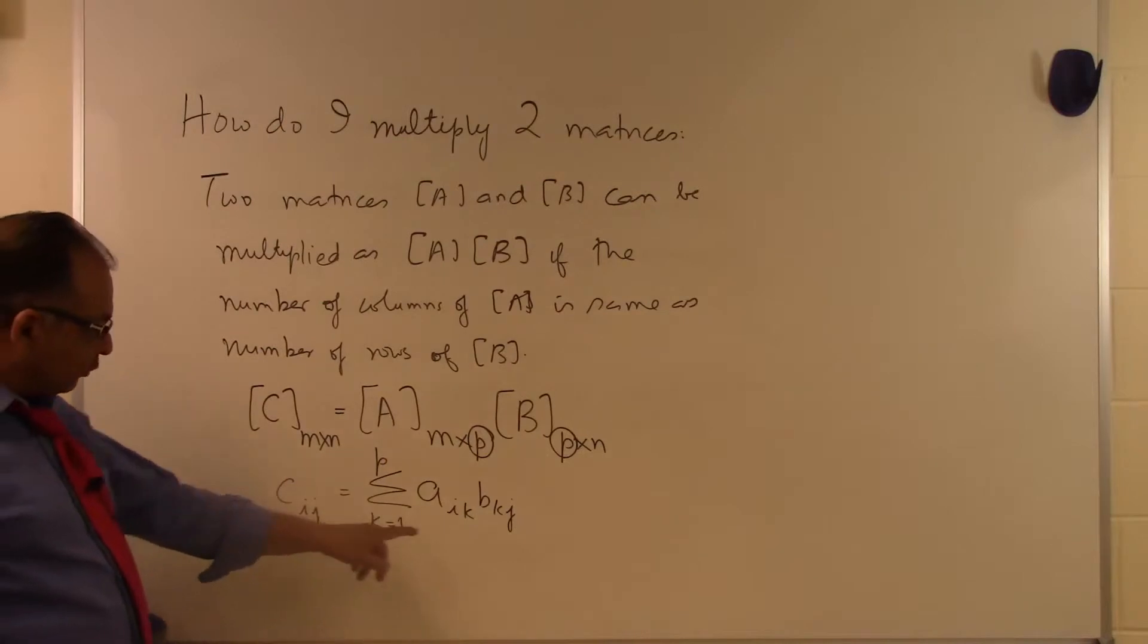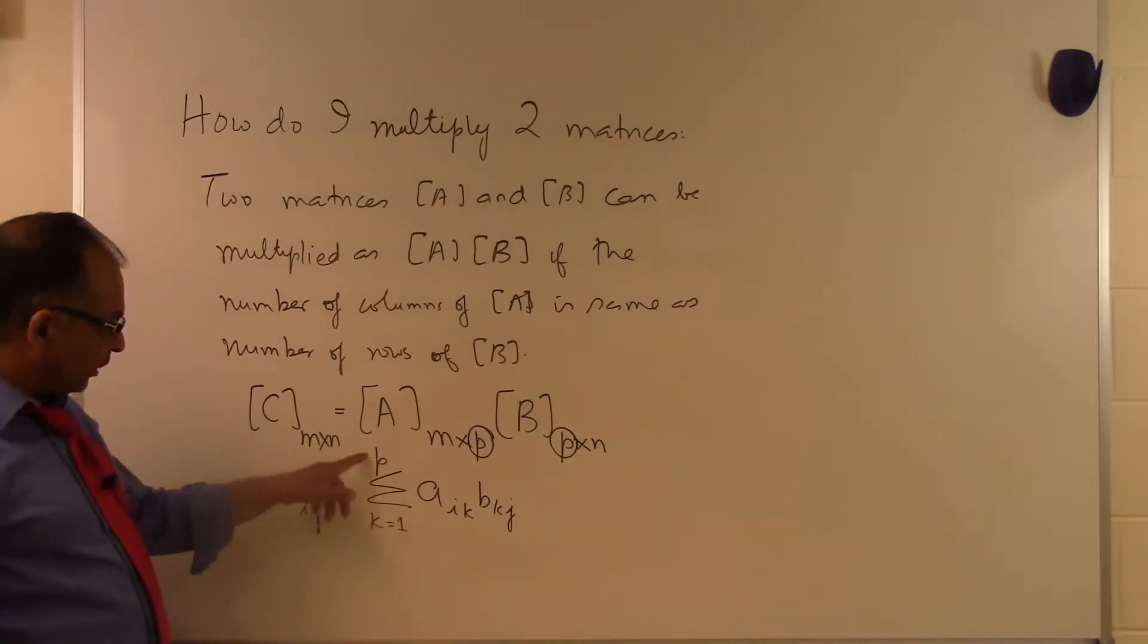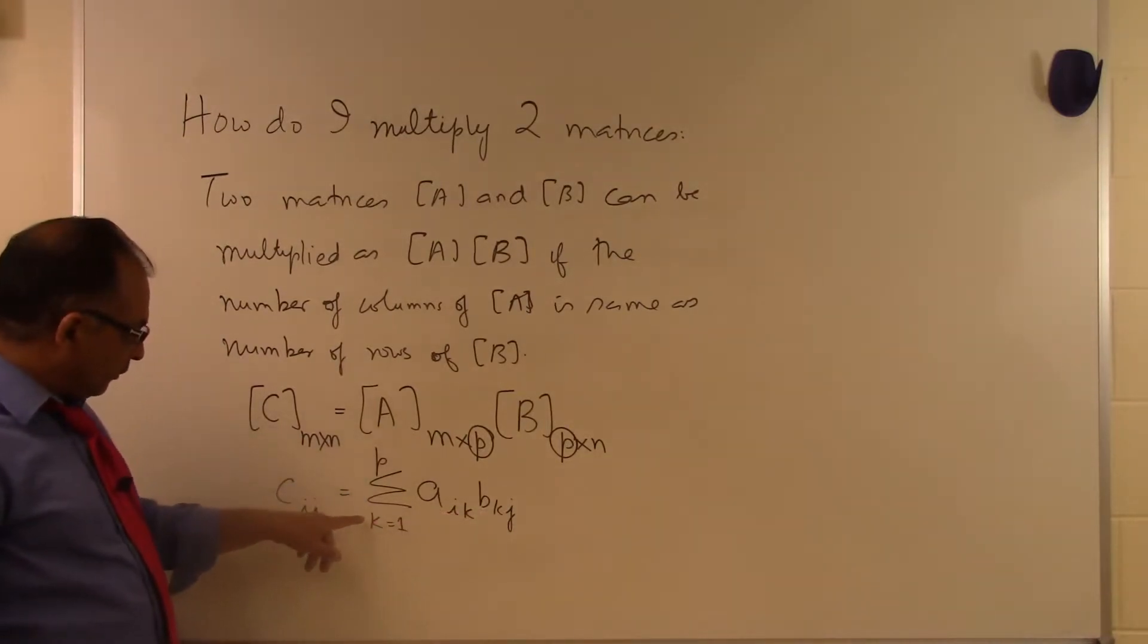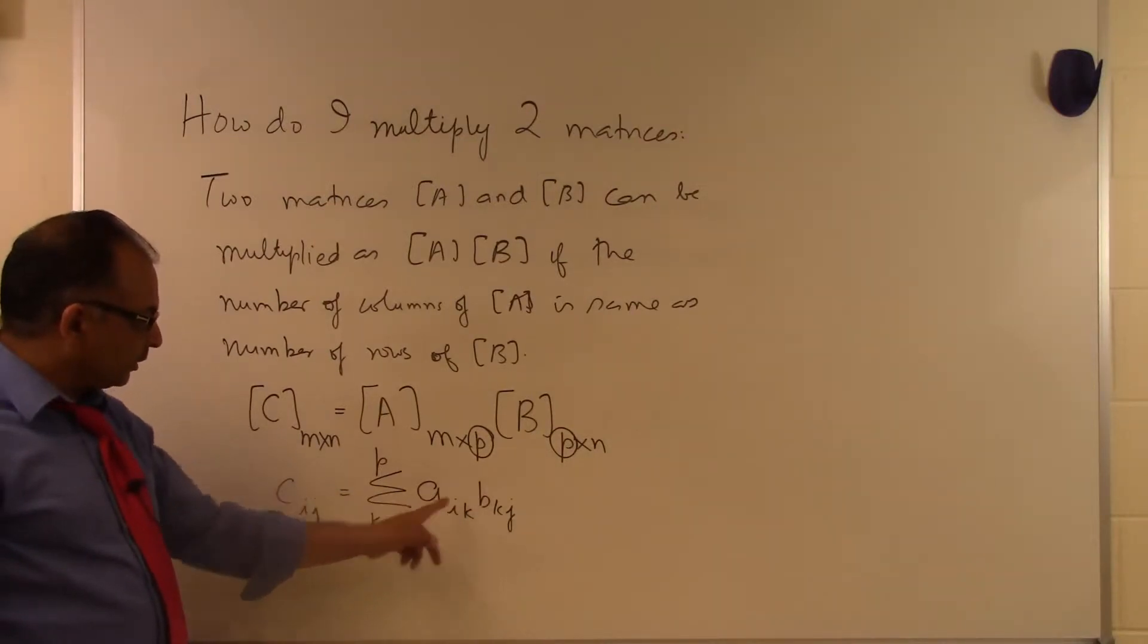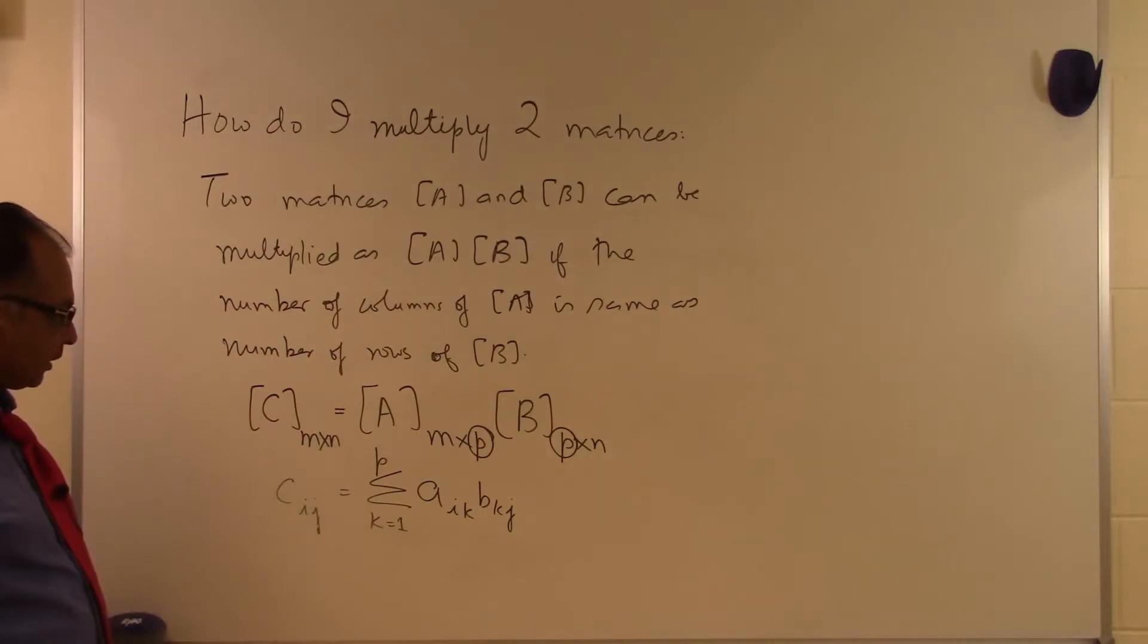To find the ijth element, take the ikth elements of A where k ranges from 1 to P, and the kjth elements of B where k also ranges from 1 to P. Multiply these pairs and then add all the products to get C_ij.